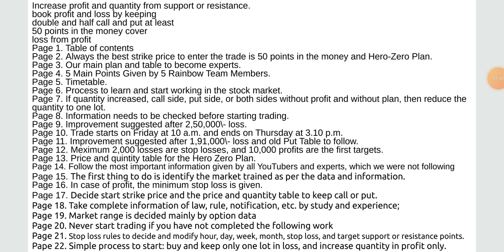10. Trade starts on Friday 10 AM and ends on Thursday at 3:10 PM. 11. Improvements suggested after 1,91,000 loss and all put table to follow. 12. Maximum 2,000 losses are stop losses and 10,000 profits are the first targets. 13. Price and quantity table for the hero zero plan.